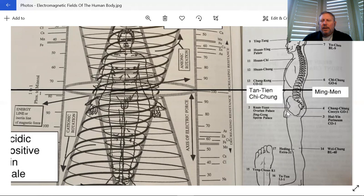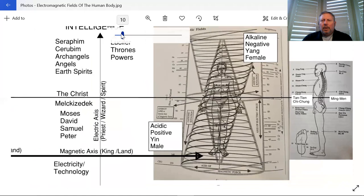We want this Qi flowing, but we want to be balanced within this line. This can be balanced through diet, within the alkalinity and acidity mix, and through the use of meditation and other practices.